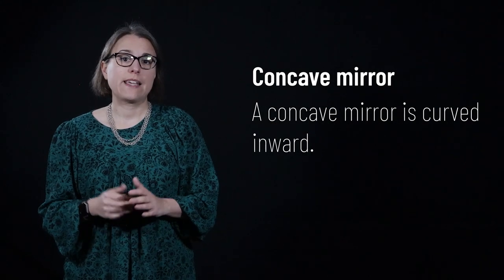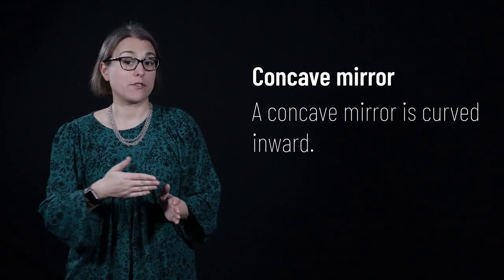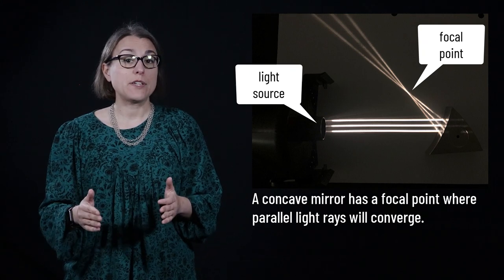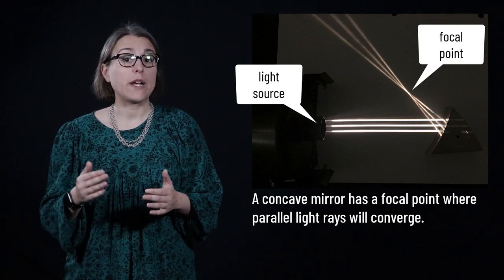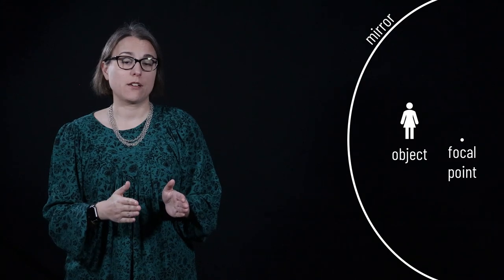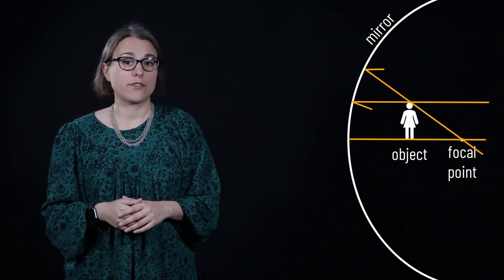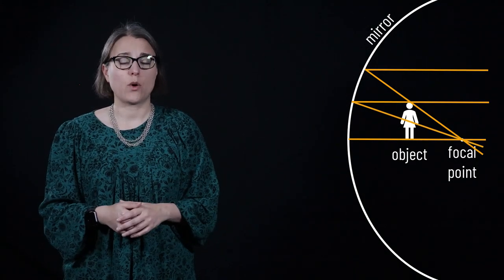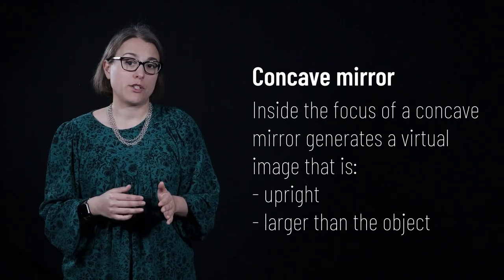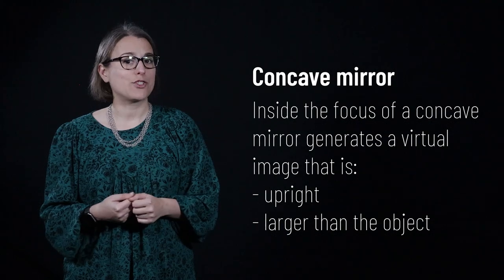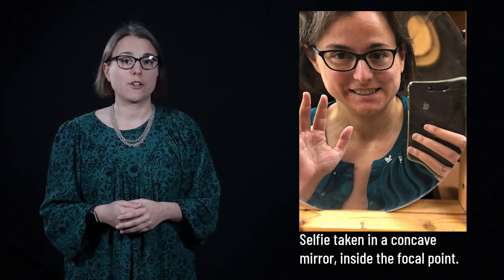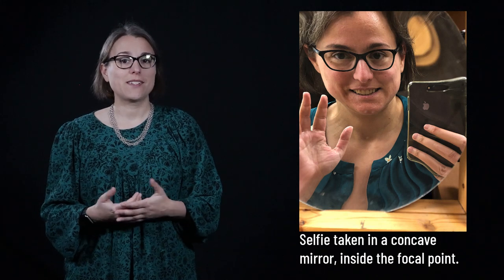There are also curved mirrors. A concave mirror is a smooth, reflective surface curved inward. A curved mirror has a focal point — a place where all parallel rays converge to a single point. The image created depends on where the object is relative to the focal point. When the object is between the focal point and the mirror, the reflected rays create a virtual image behind the mirror that is upright and much larger than real life. You may have used this in a makeup or shaving mirror, which greatly magnifies the appearance of your face.